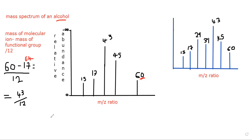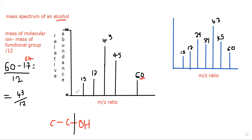You would have a hydrocarbon portion attached to an OH group. If you remove the OH group, what you're left with is a fragment. That is why you treat the amount of carbons in the compound as a fragment. So 60 minus 17 gives us 43, and as mentioned, 43 is a propyl group — so our alcohol is propanol.